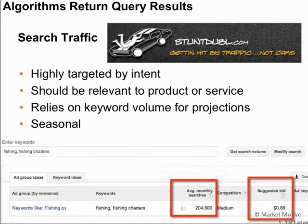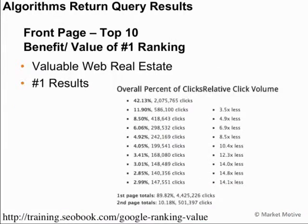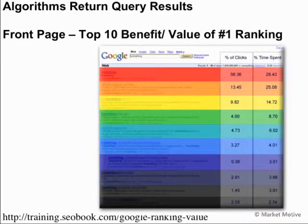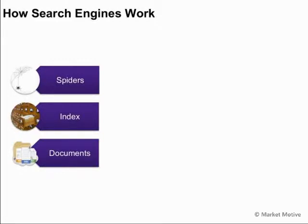Search traffic refers to visitors that come to your website through the search engines, and it's traditionally more valuable than other types of web visitors because of the relevance and intent of those users. We want to determine the overall value of an SEO campaign — why is it important to rank for these keywords? The real benefit is achieving a number one ranking or first page ranking. Training.seobook has good information on the value of front page results and estimated click-through rates.